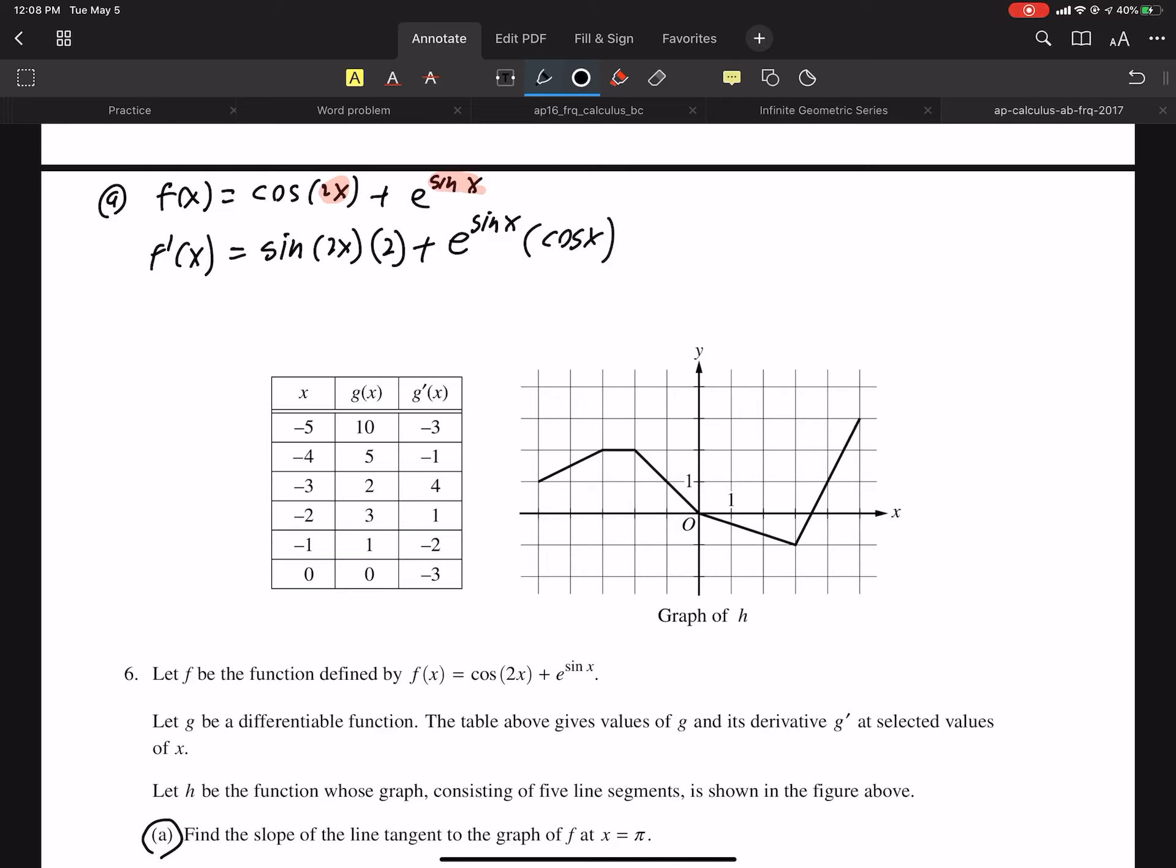Sine of 2π times 2 plus e to the sine π cos π. Alright, this answer should be fine. I don't like having sines of π's and 2π's. They're so easy. I like simplifying. The sine of 2π is 0. And the cosine of π is negative 1. So my answer is negative e to the sine x.